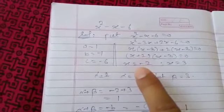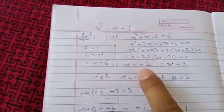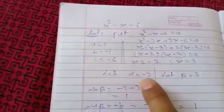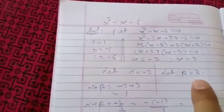So from here we will get the value of x as -2 and 3. Let us consider alpha = -2 and beta = 3.